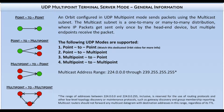Before setting up UDP multipoint mode, I want to briefly cover what this entails. UDP multipoint mode utilizes sending IP packets using multicast IP addresses. This subnet is a one-to-many or many-to-many distribution. This means that devices configured for multipoint mode can send data to multiple hosts by only sending the IP packet once.